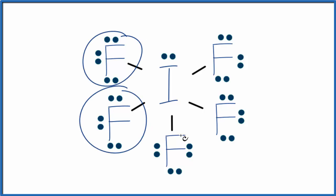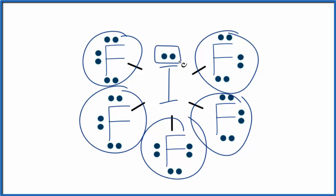We have one, two, three, four, five, six things. Five atoms and a lone pair.